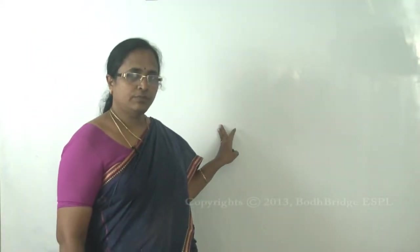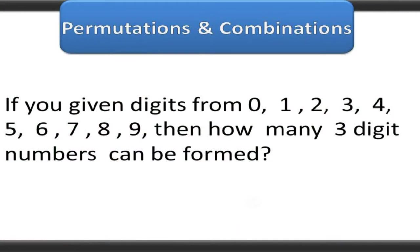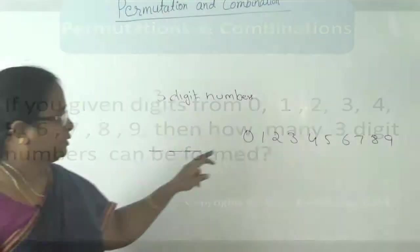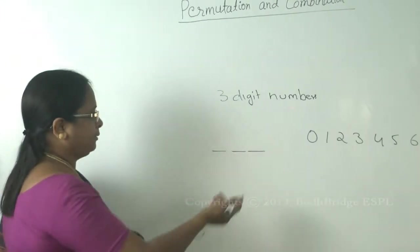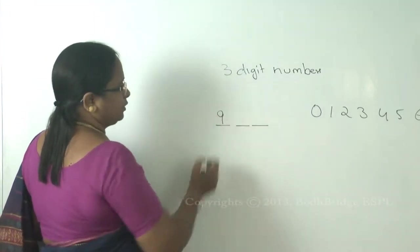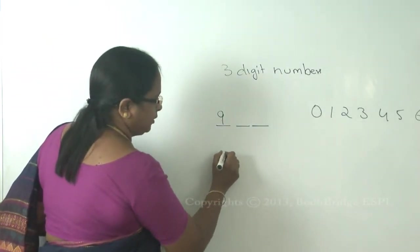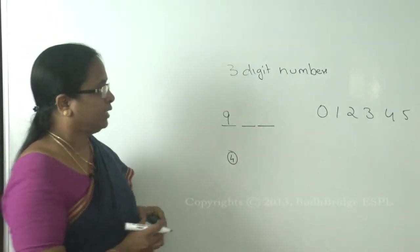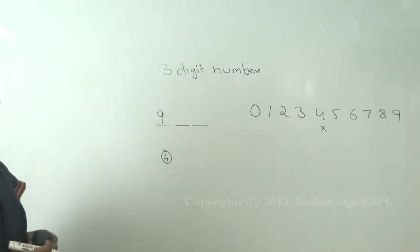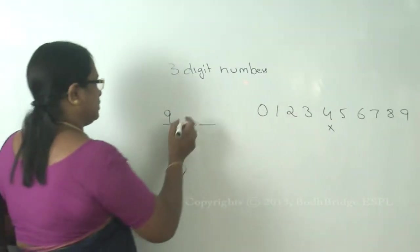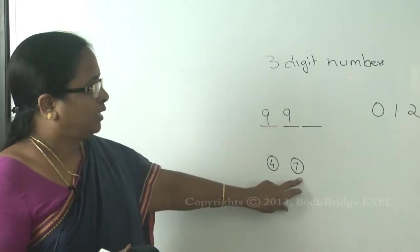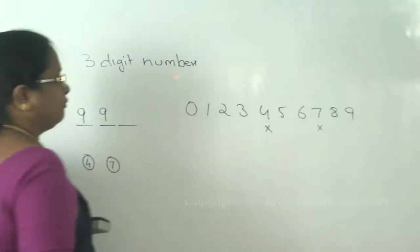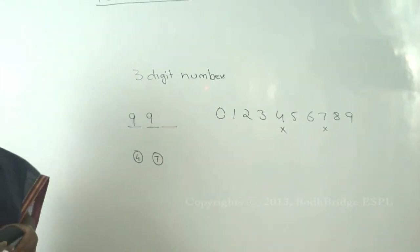Permutation and combination can also be used for numbers. Given digits zero to nine — ten digits — how many three-digit numbers can be formed with no repetition? Fill the first slot with any of the nine digits (zero cannot come first). For example, if four is selected for the first slot, four cannot repeat. Now nine digits remain and all nine can fill the second slot since zero is allowed there. If seven is selected second, four and seven are gone, leaving eight digits.